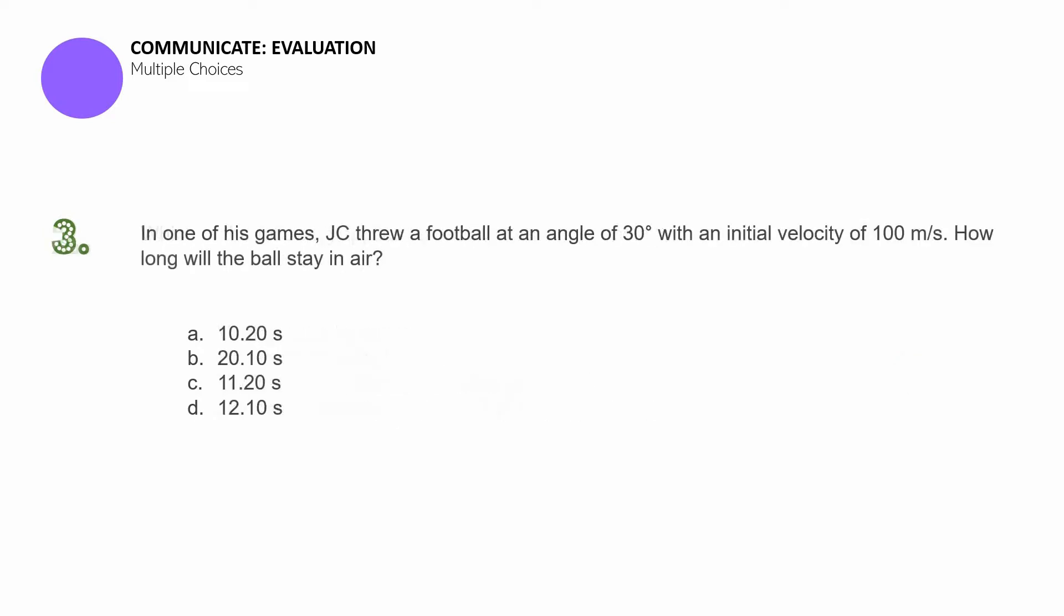Question number three. In one of his games, JC threw a football at an angle of 30 degrees with an initial velocity of 100 meters per second. How long will the ball stay in air? A, 10.20 seconds. B, 20.10 seconds. Is it C, 11.20 seconds. Or D, 12.10 seconds.